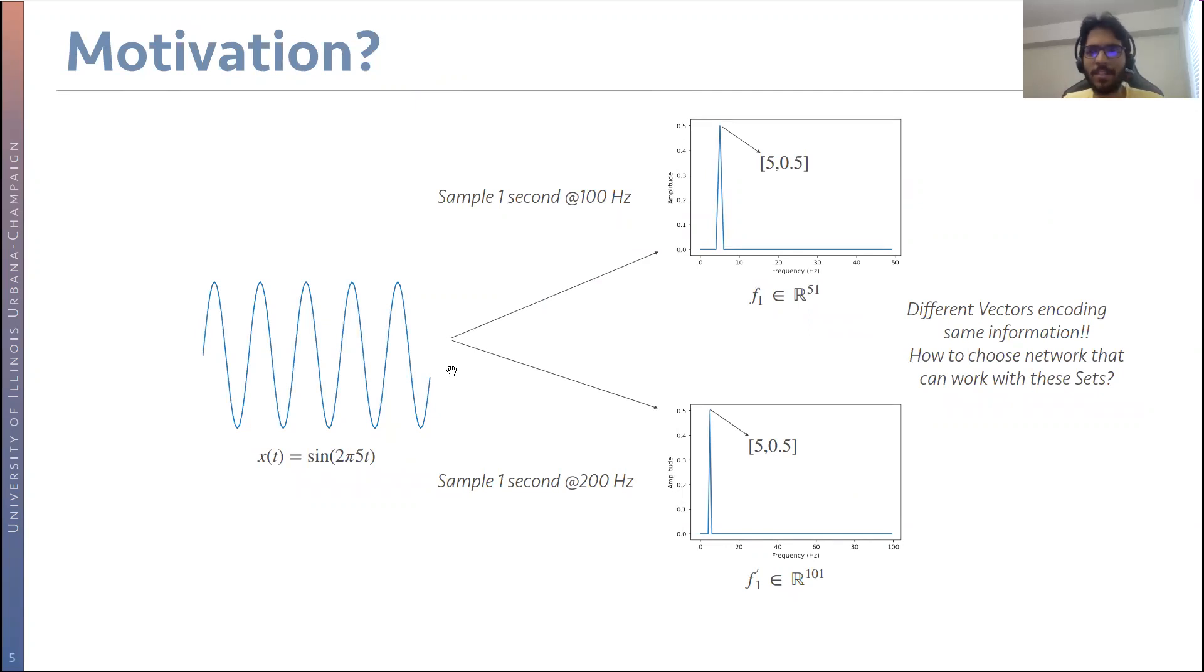So why shift to such a representation? Consider this simple case of having a 5-hertz sinusoid. Say I sample one second of this at 100 hertz. So this is a 100-dimensional signal. And I take the DFT. The DFT will have a peak at the frequency index corresponding to 5 hertz. Since it's a real-valued signal, it would be a 51-dimensional vector. At the same time, if I sample it at 200 hertz, I would have a 200-dimensional input signal. Taking the DFT, I would still get a peak at the same frequency index corresponding to 5 hertz, the same magnitude. But my DFT vector would now be a 101-dimensional vector.